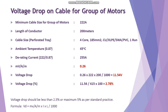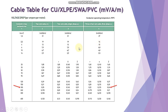Every time you calculate cable size you need to fulfill three conditions: voltage drop, current rating, and short circuit. First we check the voltage drop condition. The minimum cable size for this group of motors is 222 amperes and the conductor length is 200 meters. We go to the cable table and select a 185 mm² cable.